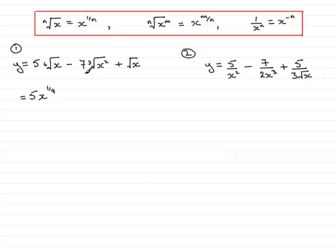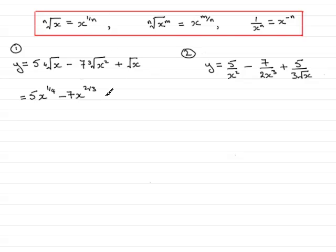Now, for the second term, I've got minus 7, and that is being multiplied by the cube root of x squared. So I use this result here, where n is 3 and m is 2. So I get that this x becomes x to the power 2 thirds. And for the square root of x, I've got to go back to this rule again. For the square root of x, n is 2 — it's just understood that that would be a 2. So this becomes x to the power 1 half. So I write that in as plus x to the power 1 half.